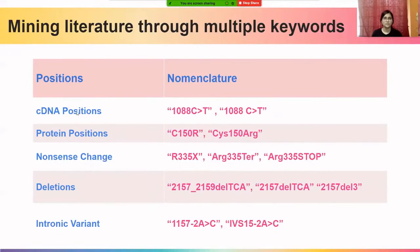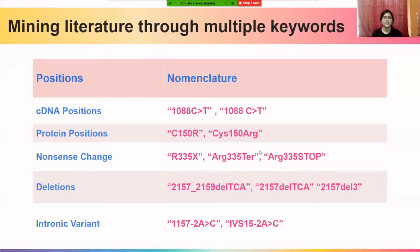In case of cDNA positions, sometimes there may be a space added between the position and the nucleotide change. In case of protein positions, sometimes three-letter amino acid codes are used instead of single-letter codes, which might result in skipping some articles during the literature search. In case of nonsense changes, sometimes the word 'TER' or 'stop' is added instead of 'X', which is the single-letter representation of a stop codon.